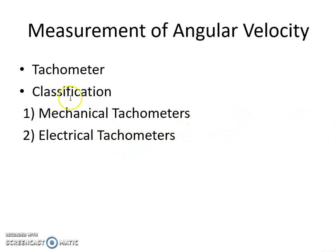There are two types of tachometers: mechanical tachometers and electrical tachometers. Mechanical tachometers include hand speed indicator, revolution counter and timer, tachoscope, centrifugal tachometers, and vibrating reed tachometers. Electrical tachometers include DC tachometer generator, AC tachometer generator, photoelectric tachometer, eddy current or drag cup tachometers, capacitive tachometers, and stroboscopic tachometers.